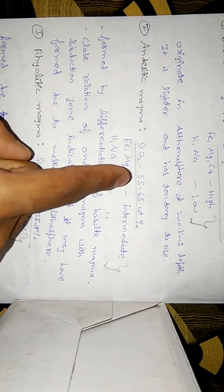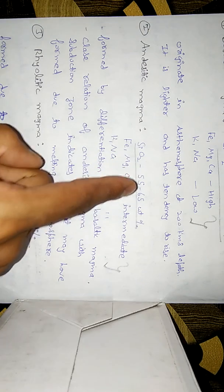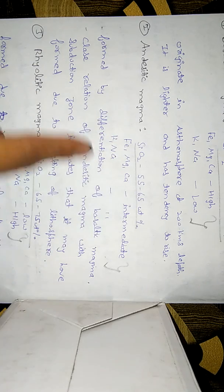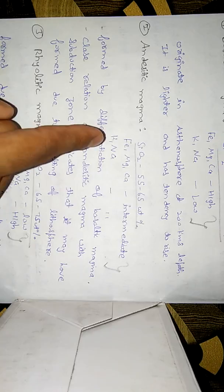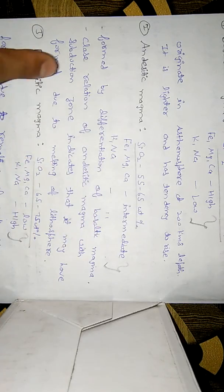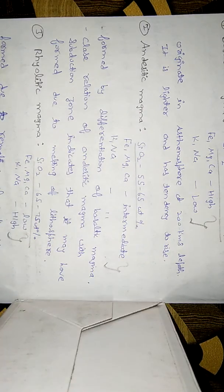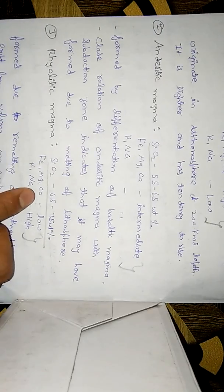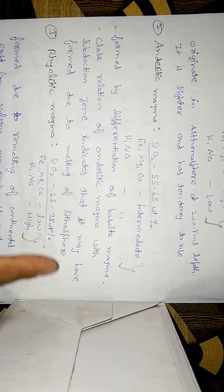Next is andesitic magma. SiO2 is in the range of 55 to 65 weight percent. Fe, Mg, and Ca are intermediate, and K (potassium) and Na (sodium) are also intermediate. Andesitic magma is found by differentiation of basaltic magma — differentiation is a very vast process and I will make another video on that topic. The close relation of andesitic magma with the subduction zone indicates that it may have formed due to melting of the lithosphere.